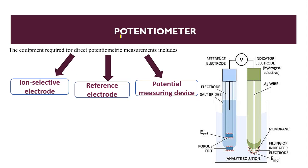Looking at the diagram of the potentiometer, there are two types of electrodes: the reference electrode and the indicator electrode. The indicator electrode contains a silver wire. The two electrodes are connected by a salt bridge, and a voltmeter measures the potential difference between them.